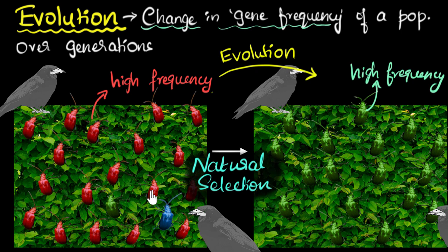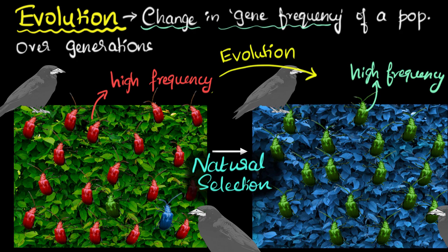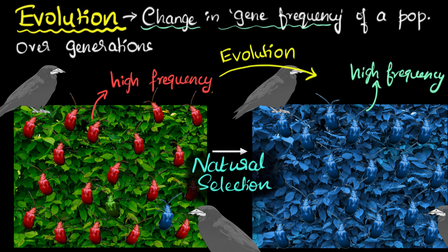This might make you think the green variant is superior and the blue variant was useless. But that would be the wrong way to think about it. The green was superior only in this situation. What if, as time passed, the bushes also started changing color — what if the bushes slowly changed to blue? The environment can keep changing. Then the green wouldn't be selected because they'd lose their advantage, and it would be the blue that gets selected. The beetles would then evolve into blue color.